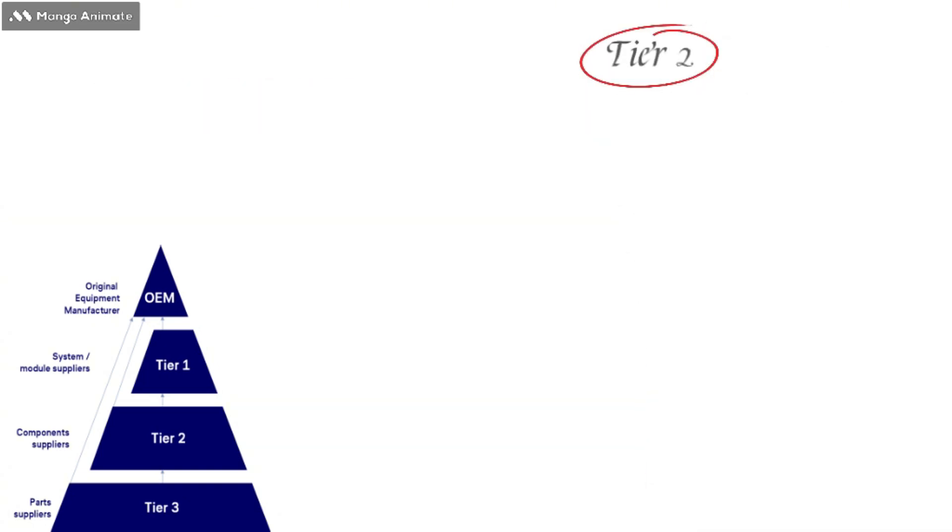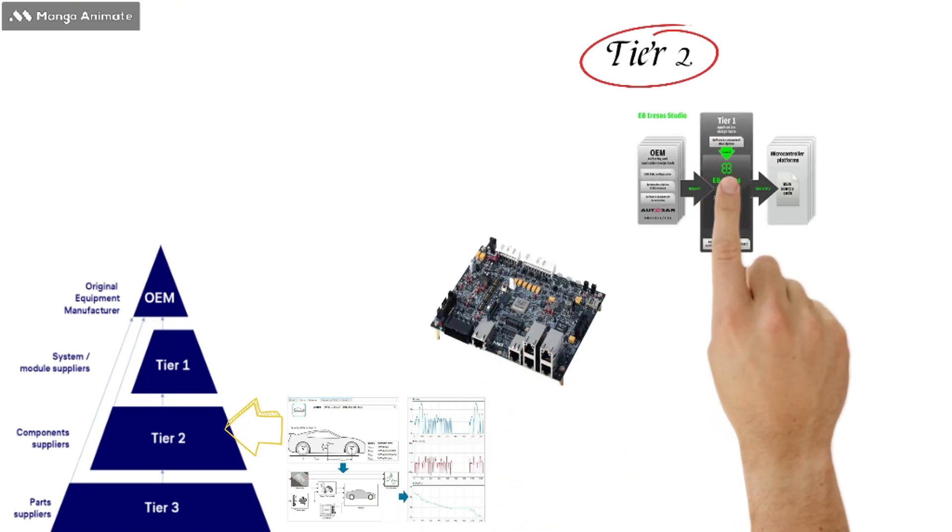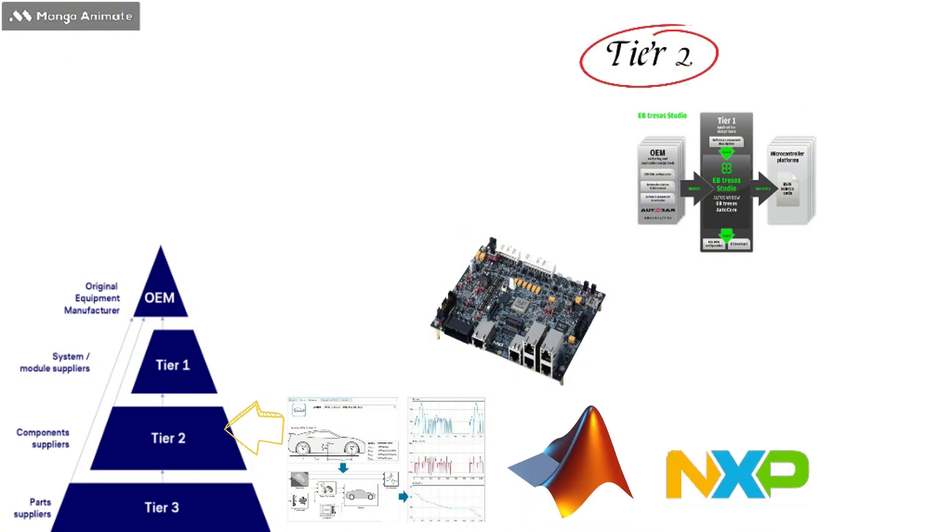Tier 2 is the supplier to the Tier 1 and OEMs. It mainly provides the hardware and some other tools such as MATLAB, NXP, Electrobit and Vector.